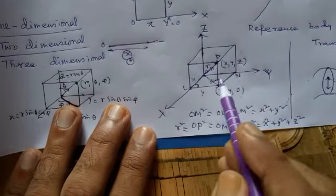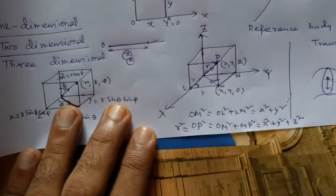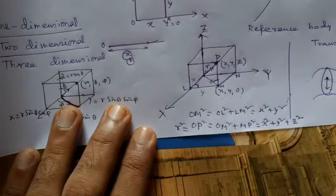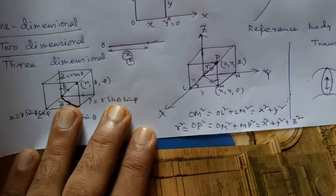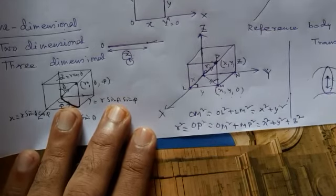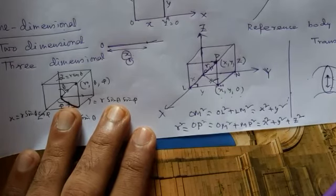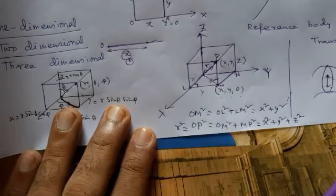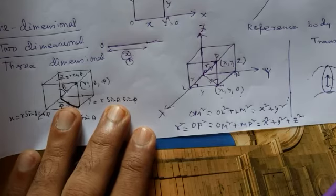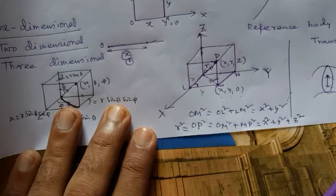We are adding this result. The Z coordinate means z is a parallel line, and next to Z equals zero. That means if xy equals 0, then y is equal to 0, and if y is equal to 0, then y is equal to 0.